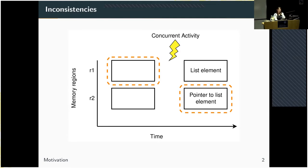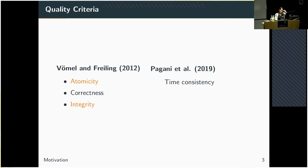This is a state that has never existed like this. Because this issue is known, people have been thinking about what defines the quality of a memory image, especially in situations where we can't freeze the system. Ten years ago, Föhmel and Freiling came up with three quality criteria: namely atomicity, correctness, and integrity.